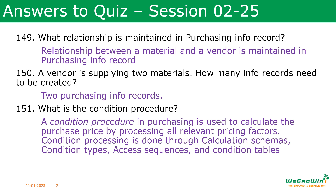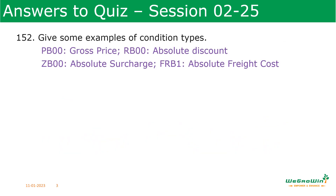What is the condition procedure? The condition procedure in purchasing is used to calculate the purchase price by processing all relevant pricing factors. Condition processing is done through calculation schemas, condition types, access sequence, and condition tables. Some examples of condition types are PB00 gross price, RB00 absolute discount, ZB00 absolute surcharge, and FRB1 absolute freight cost. There are many more examples.